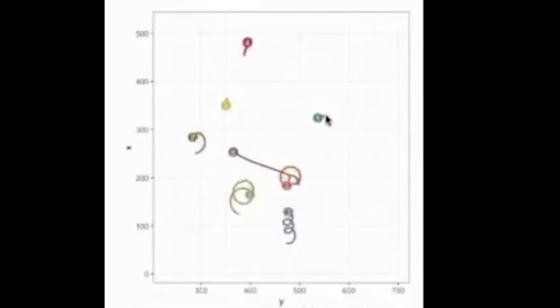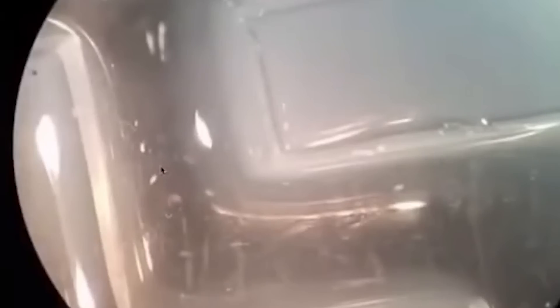They can go in circles, they can go straight back and forth. Here you can see a bunch of them in their various tracking data. These two are interacting, these are sitting there doing nothing. Here's one navigating a maze in still water. It moves along, takes the corner without bumping into the opposite wall, and then at some point decides to turn around and go back.